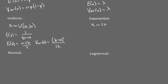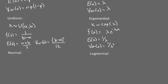For the exponential, we often write x is approximately exponential with parameter 1/lambda. The density is lambda·e^(−lambda·x), where the expected value of x is 1/lambda and the variance of x is 1/lambda².